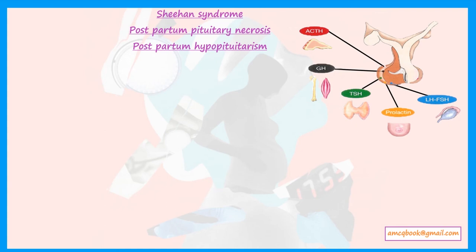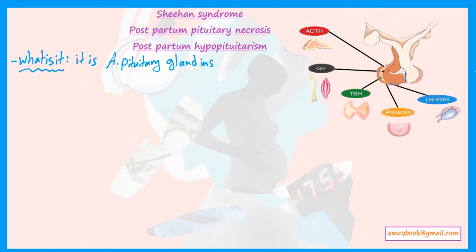Sheehan syndrome, also called postpartum pituitary necrosis or postpartum hypopituitarism, is anterior pituitary gland insufficiency which occurs due to secondary massive obstetric hemorrhage and shock.